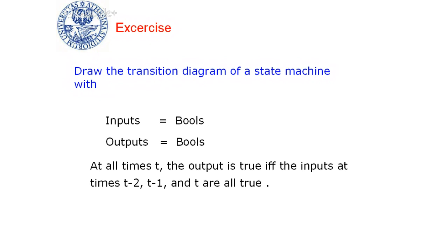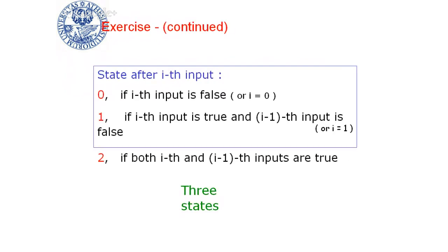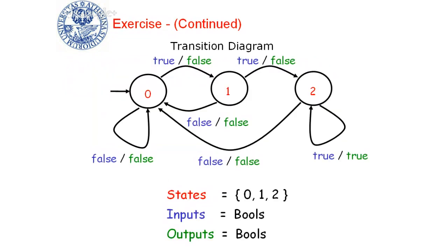In general, one problem is: how can we tell when two state machines are actually defining the same behavior? When two state machines define the same behavior but one has three states and the other has four, you will typically think the smaller one is more convenient. The fewer states you have, the better it is.